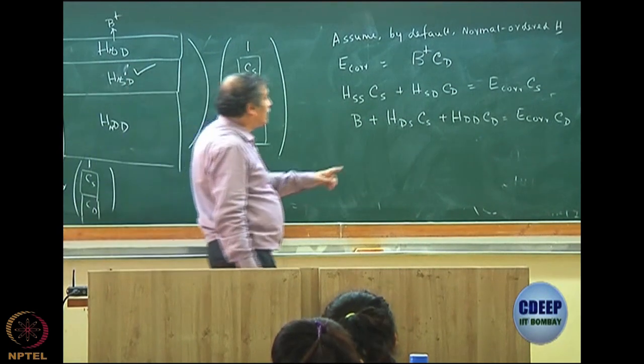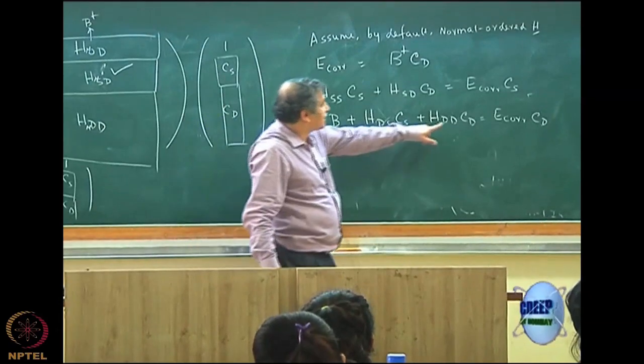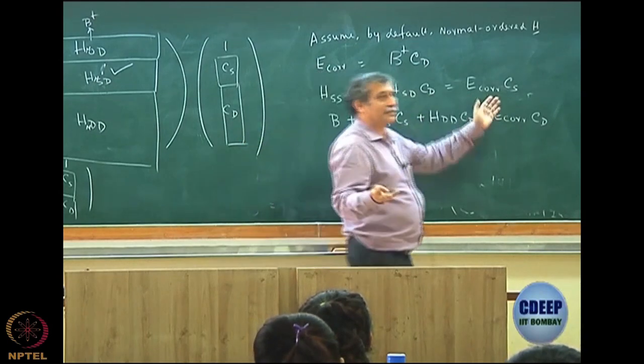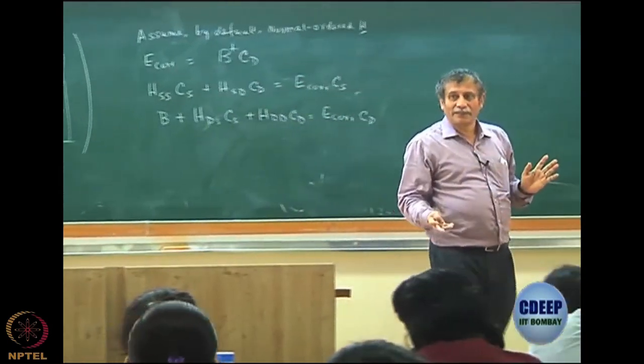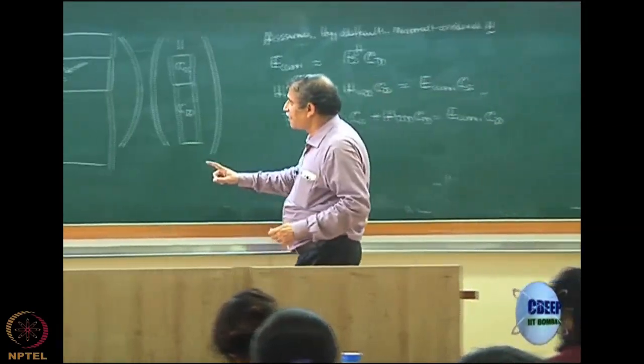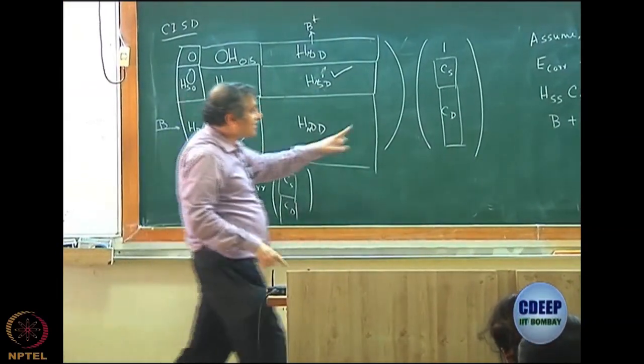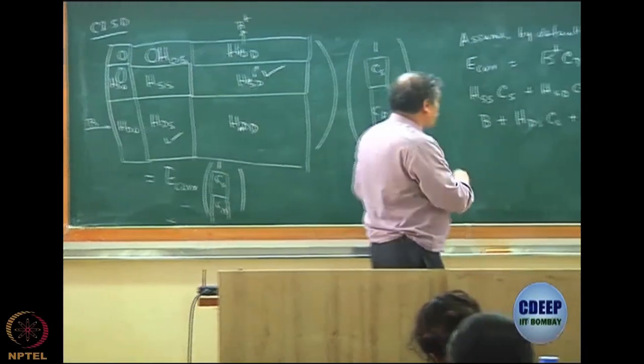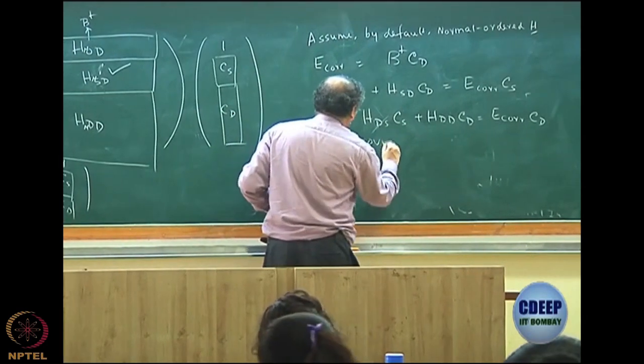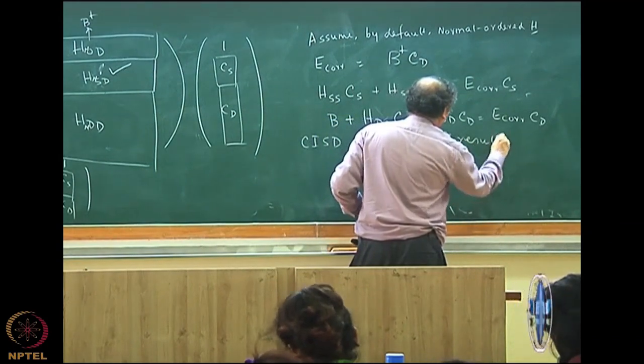Note that if this term was not there, then my CD equation would have been exactly like double CI, and your correlation energy is exactly like double CI. So I do not care about this equation. What is HSS? I am least bothered. The problem is this guy, the DS or HDS. This guy is not 0, and that is the reason CISD gives a different result. So CISD provides different result from DCI.